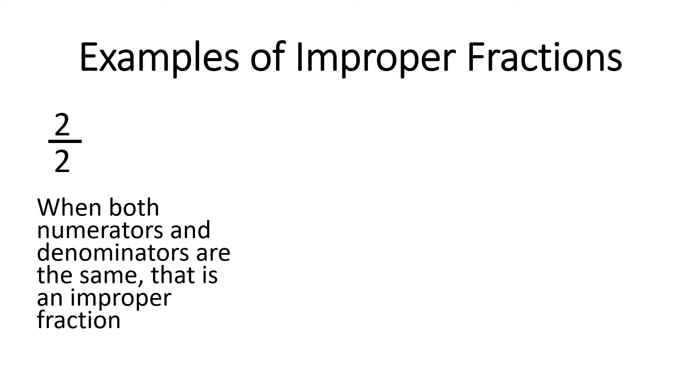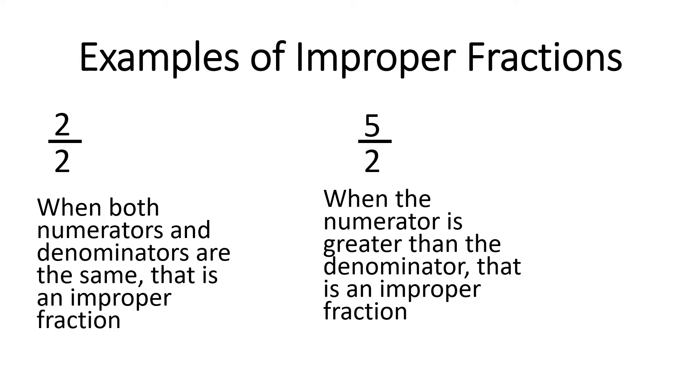Same with 3 over 3, 4 over 4. That's improper. Another example is 5 over 2. And this is also improper because when the numerator is greater than the denominator, numerator is the top number, denominator is the bottom number. That is also an improper fraction.